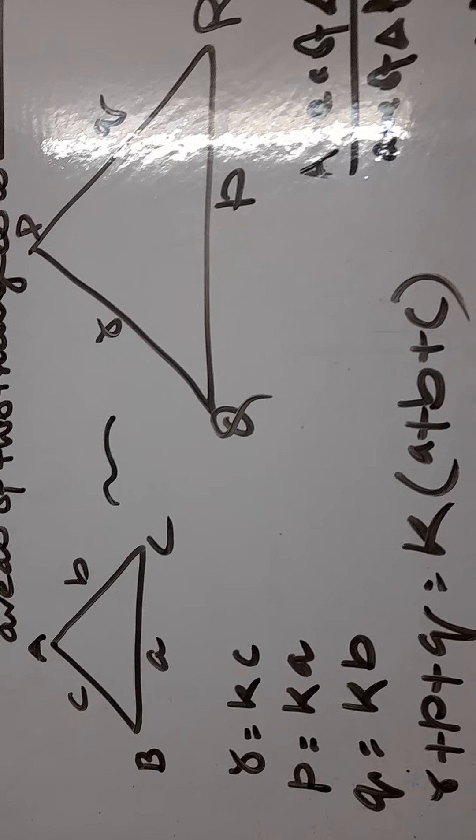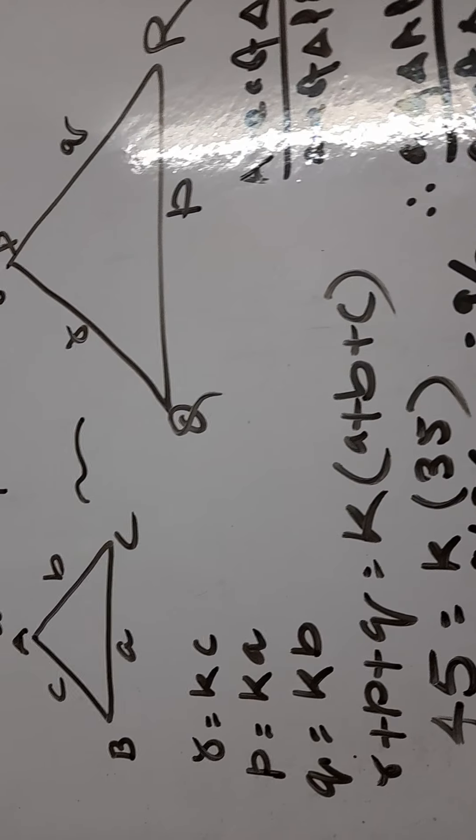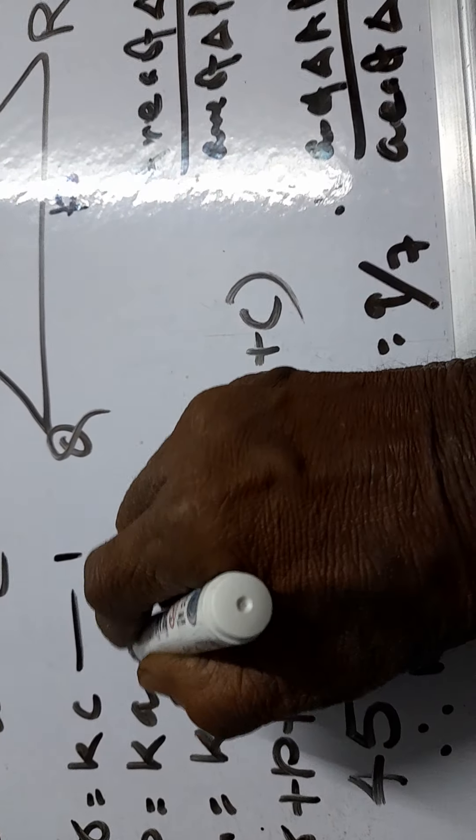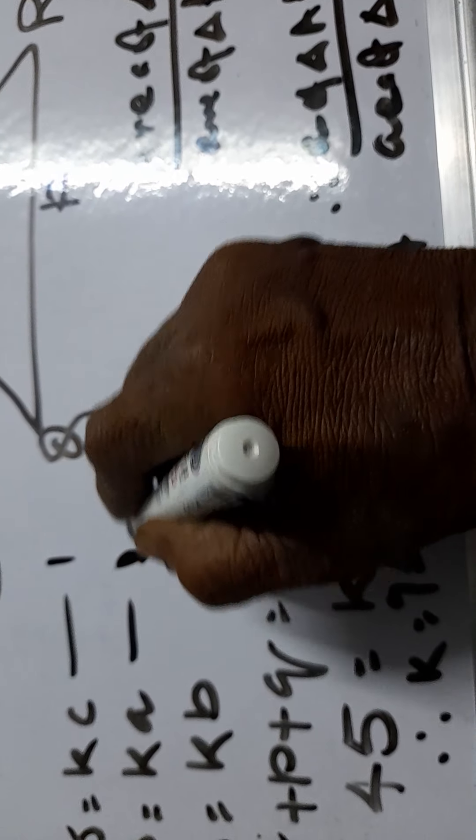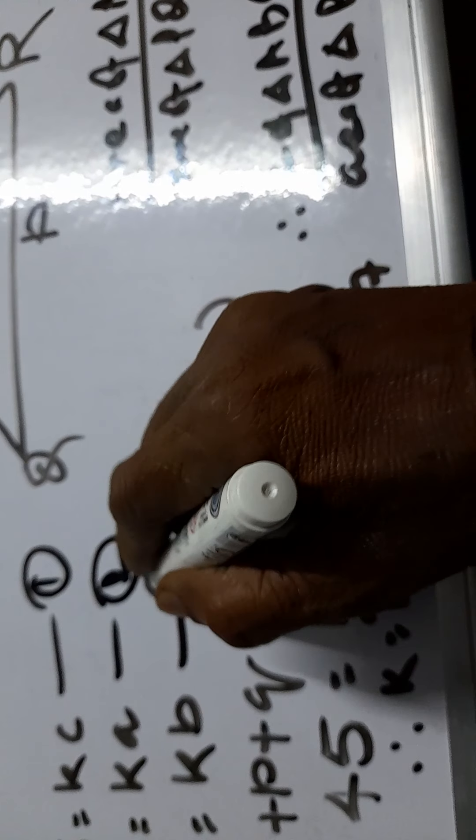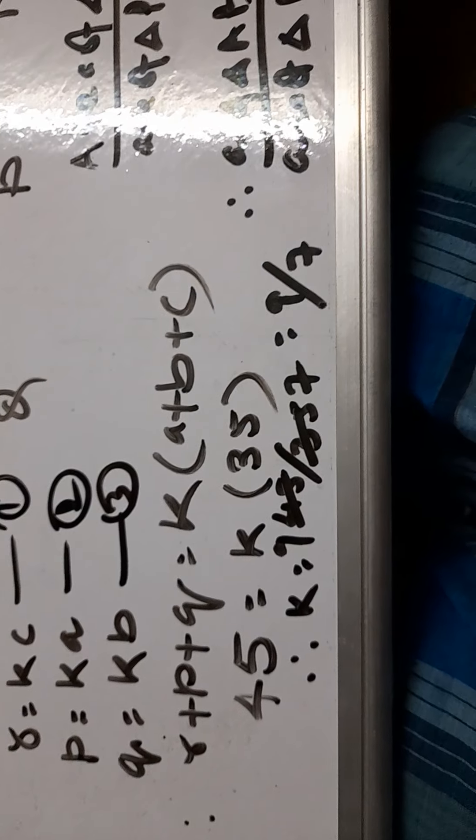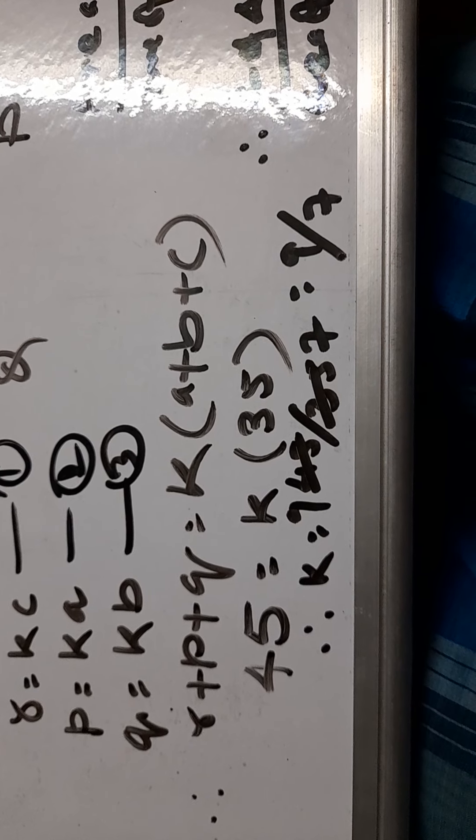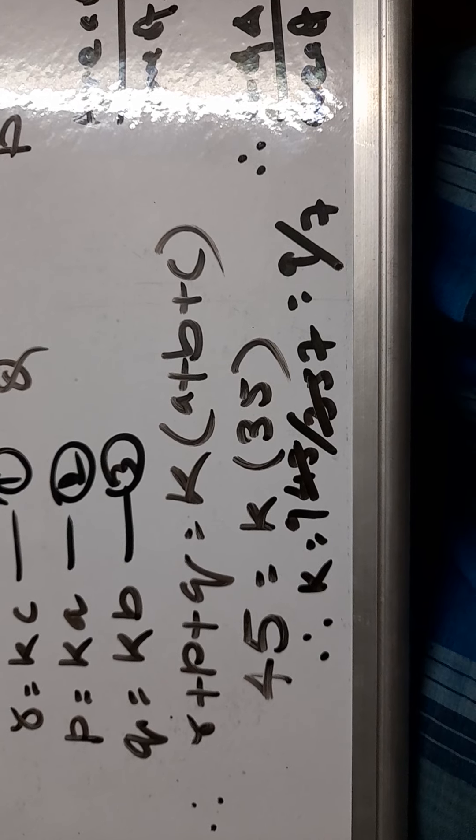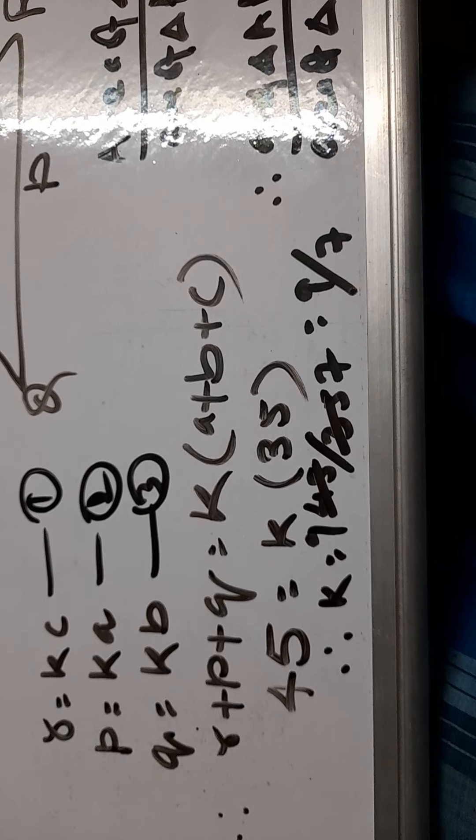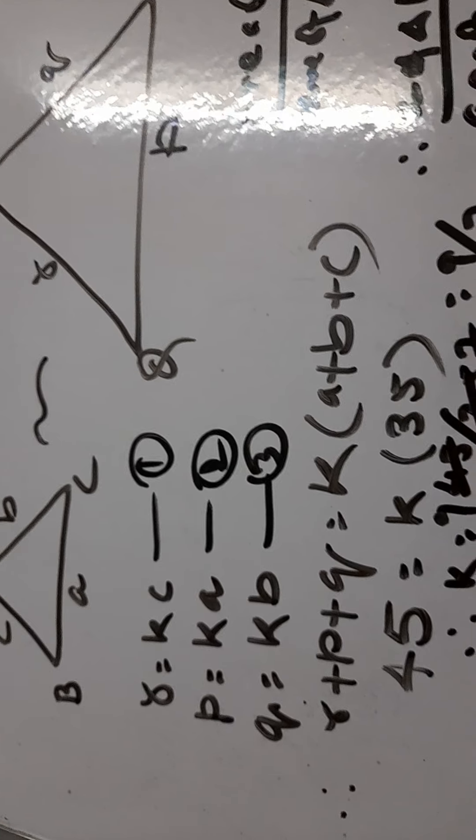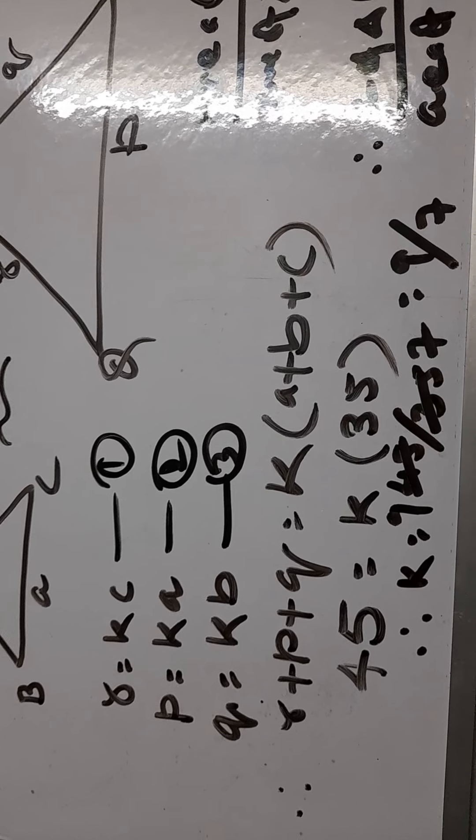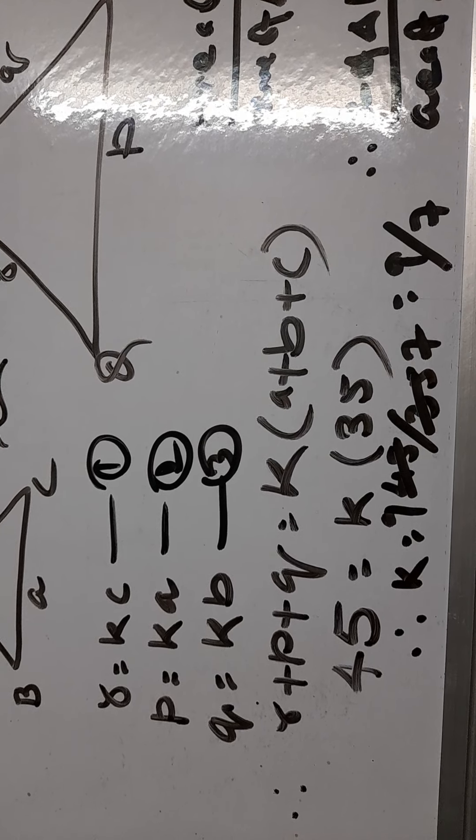If we add all these three equations, we get R plus P plus Q equals K times bracket A plus B plus C. And here it is given that the perimeter of triangle PQR is 45.